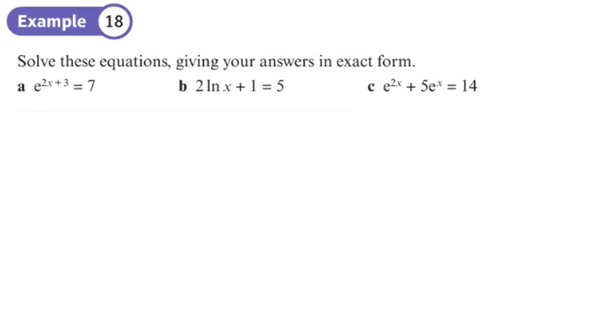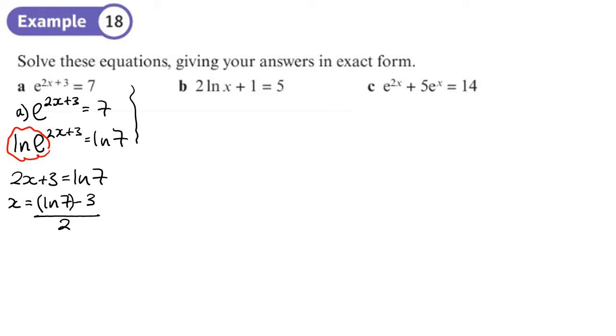So the first thing we're going to do on this one, a, is that we can do log to both sides like this. And because we have the e and the log right next to each other here, they cancel out. So that will just leave us with 2x plus 3 equals log 7. We want to give the answer in exact form. So x is going to equal log 7 minus 3. You need to be careful because it's like that, all divided by 2, or we could put a half in front of the whole lot.